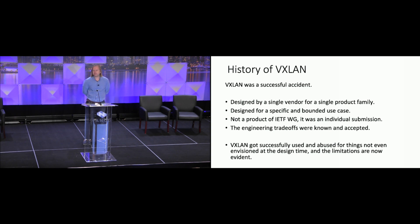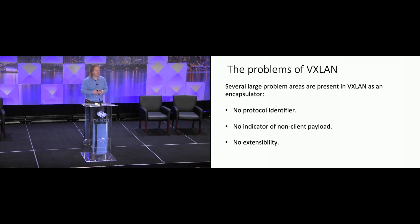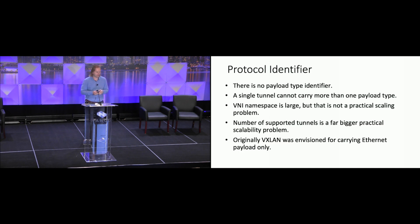However, that encapsulator is starting to show its limitations, and the limitations fall into three large families. One is there's no possibility to indicate the type of the payload — whatever gets into the tunnel, at the other end is received as-is without any indication. There is no way to indicate that the packet being sent is not the actual client packet but something else. And the worst of those — which would be able to solve those two problems — is that there is no extensibility in the protocol itself. The protocol assumes that what is carried over the external tunnel is an Ethernet payload, and if you need further demultiplexing, you need to carry the protocol identifier in the payload or use some other internal encapsulator.